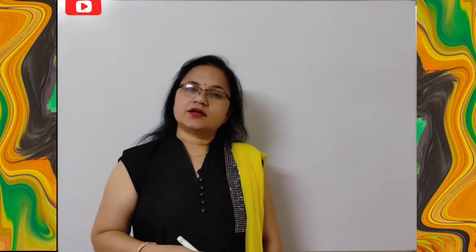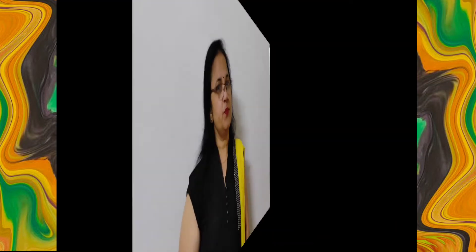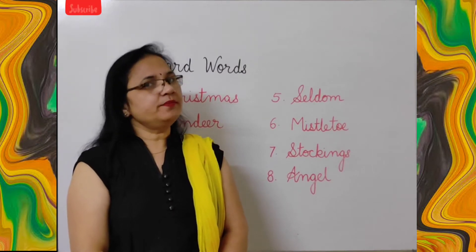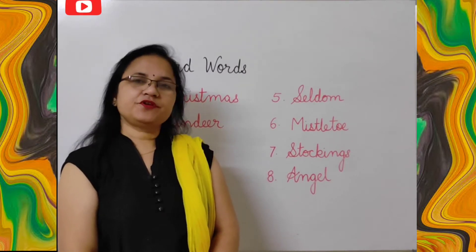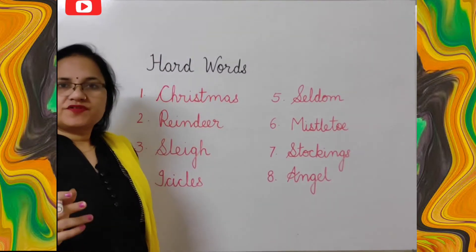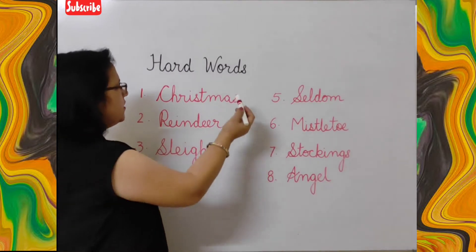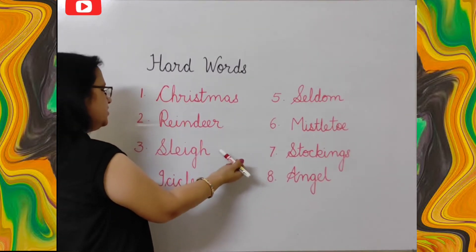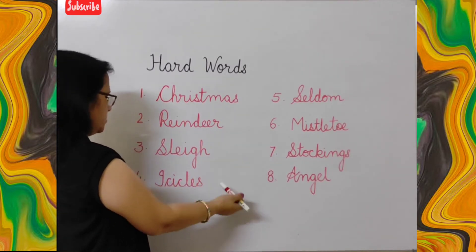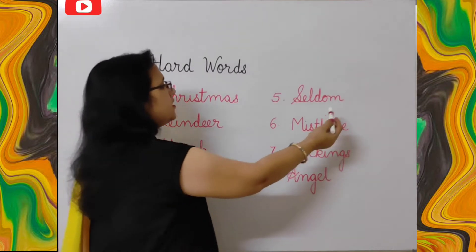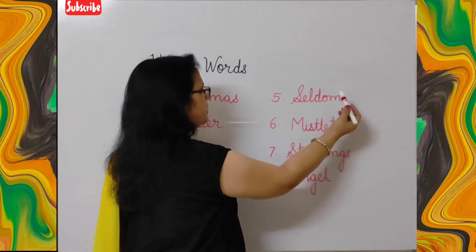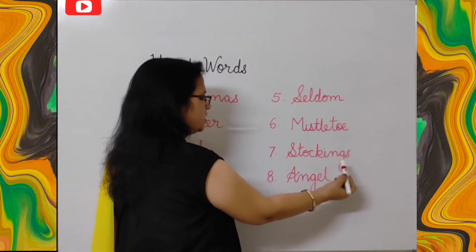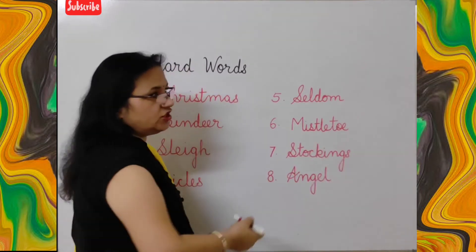Now let's write the hard words of this poem and read them for correct pronunciation: Christmas, reindeer, sledge, icicles, seldom, mistletoe, stockings, angel.